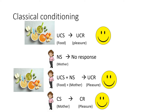In classical conditioning, the unconditioned stimulus is food, which leads to an unconditioned response of pleasure. The mother on her own initially produces no response from the baby. But when the neutral stimulus of the mother is paired with the unconditioned stimulus of food, it leads to pleasure. Eventually, through repeated pairing, the mother becomes a conditioned stimulus, which leads to the conditioned response of pleasure. That is how Learning Theorists argue attachment is formed — through food.